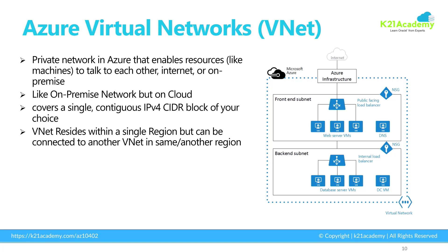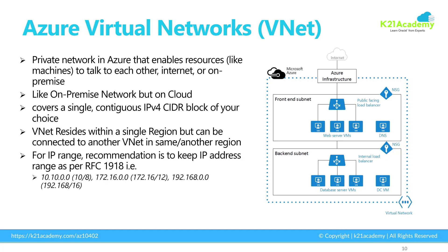We are going to look at those connections in future videos. The IP addresses recommended for these VNets are as per RFC 1918. RFC 1918 suggests that if you have non-public networks — networks not assigned to be publicly available — you select one of these three ranges: 10.0.0.0/8, 172.16.0.0/12, or 192.168.0.0/16. Typically when you're defining the CIDR, you select one of these three ranges as per RFC 1918.